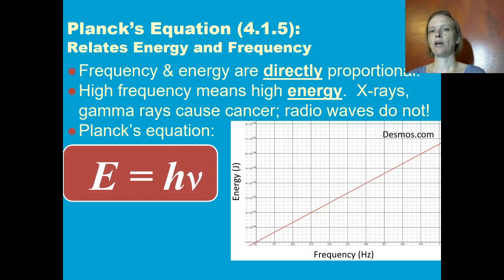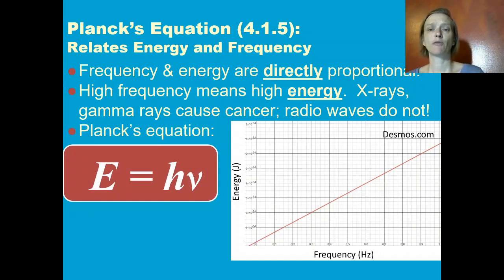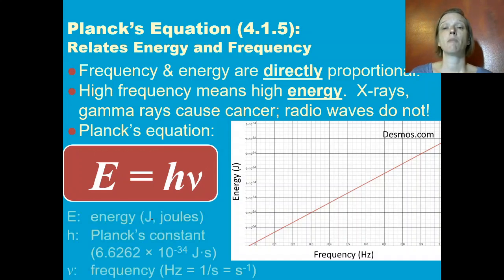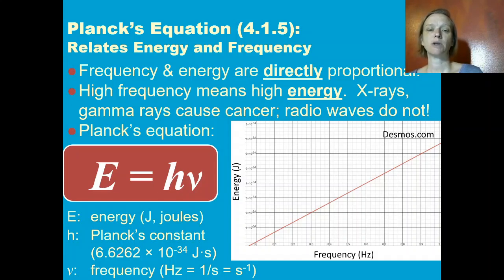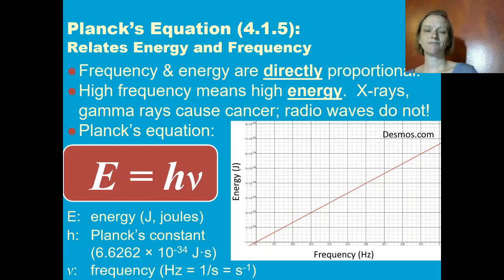Planck's equation relates energy to the frequency of the light and Planck's constant. E in this equation stands for energy, which is measured in joules. H is Planck's constant, which is 6.6262 times 10 to the negative 34 joule seconds. And frequency is measured in hertz.